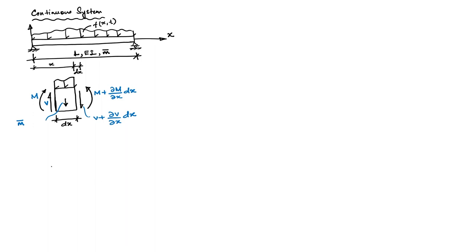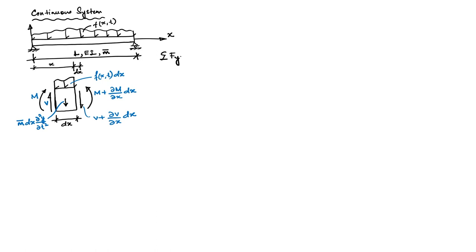Let us identify all the forces and then derive the equation of motion. The inertia force is mass per unit length (m̄) times the differential length dx — that is the total mass — multiplied by the second derivative of displacement with respect to time. The total external force is f(x, t) times dx. We have identified all the force components and can now satisfy equilibrium by setting the summation of all forces in the y-direction equal to zero.